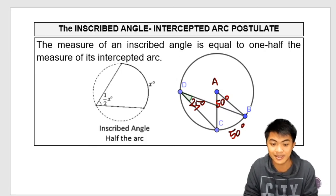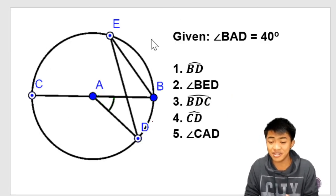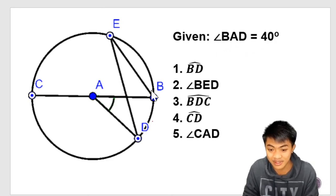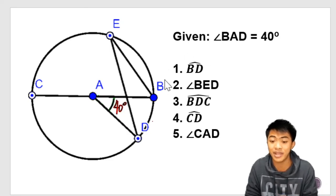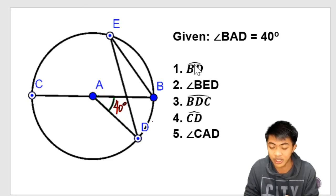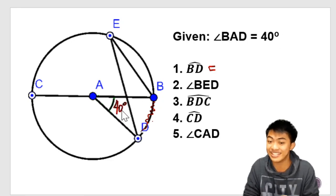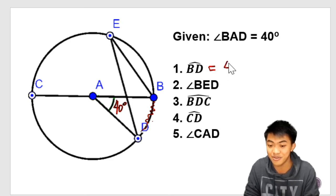So let's have some exercises. So we have here a figure given angle BAD is 40 degrees. So this is angle BAD. Okay, this is 40 degrees. Let's try to find the measures of the following. So number one, arc BD. So arc BD is the one right here. So arc BD is the intercepted arc of this angle. And this angle is 40 degrees. So its intercepted arc is also 40 degrees.